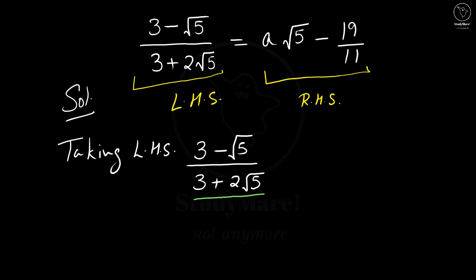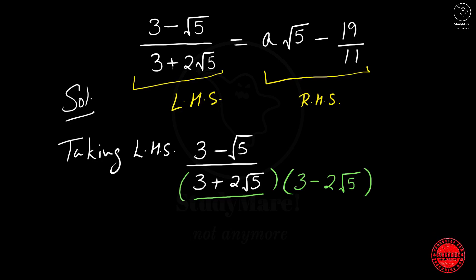The denominator has a term with a root, which means we need to rationalize the denominator. For that we need the rationalization factor, which in this case would be 3 minus 2 root 5 — we take the same term and change the sign from plus to minus. This gives us the form (A + B)(A − B), and we can use the identity A squared minus B squared. When we square B, the root goes away, which is why we use the rationalization factor.